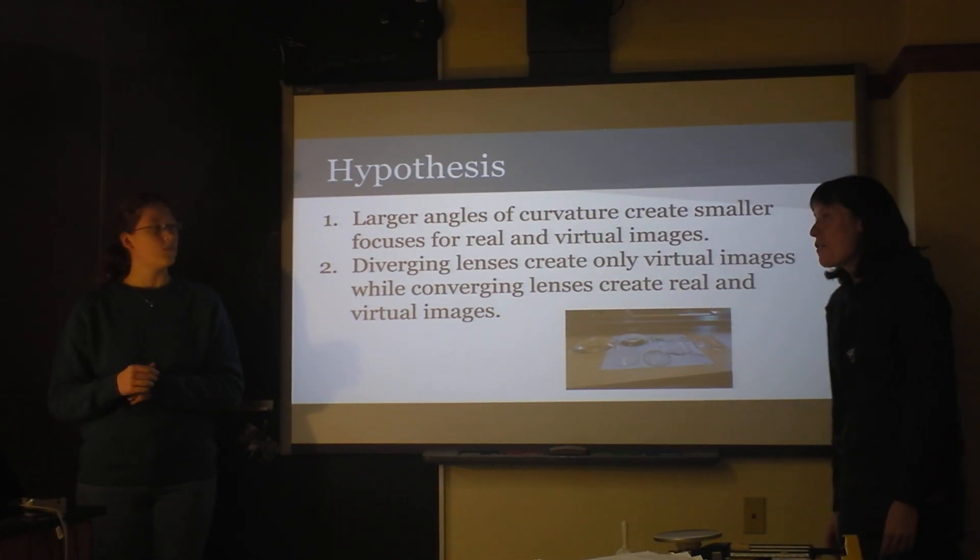So, we had two hypotheses. One was that larger angles of curvature create smaller focuses for real and virtual images, and another one that we just wanted to prove for ourselves, diverging lenses create only virtual images, and converging lenses create real and virtual images. But we also kind of took a side quest and figured out where virtual images appeared and why for a lot of lenses, just because we found that some of them had two, and we wanted to see why it was all formed.